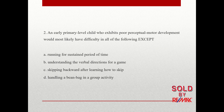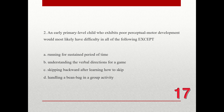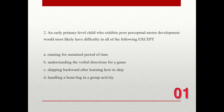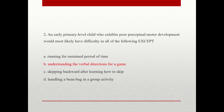Next question. An early primary level child who exhibits poor perceptual motor development would most likely have difficulty in all of the following except. The choices are A. Running for a sustained period of time, B. Understanding the verbal directions for a game, C. Skipping backward after learning how to skip, and D. Handling a beanbag in a group activity. The correct answer is B. Understanding the verbal directions for a game.